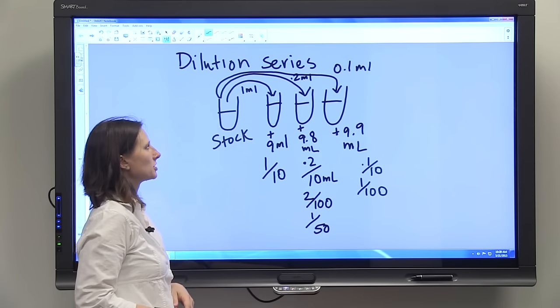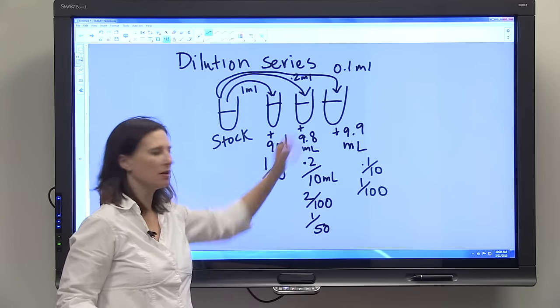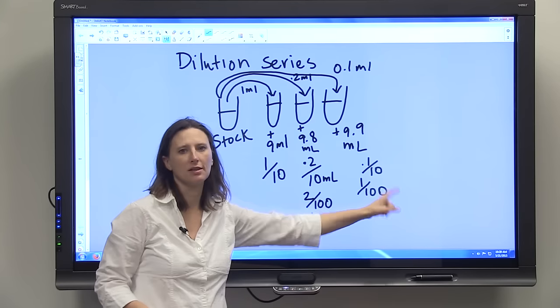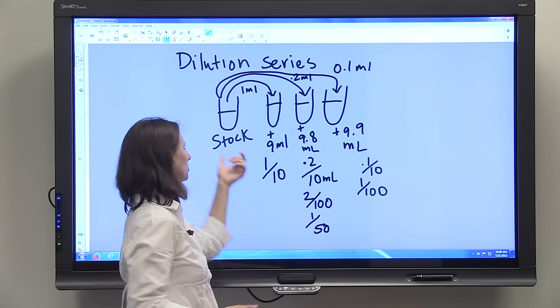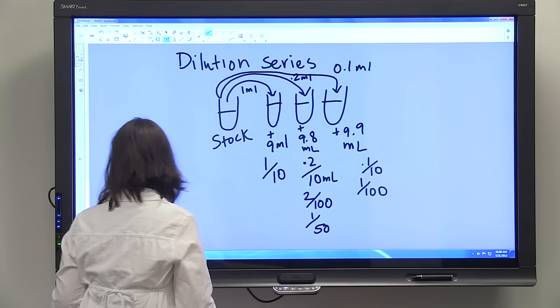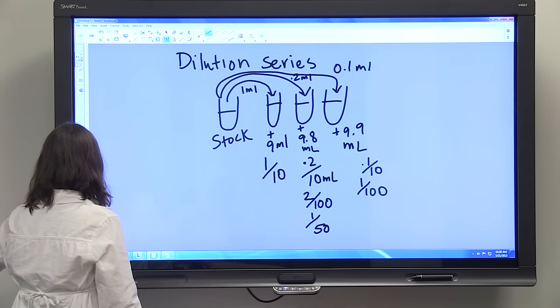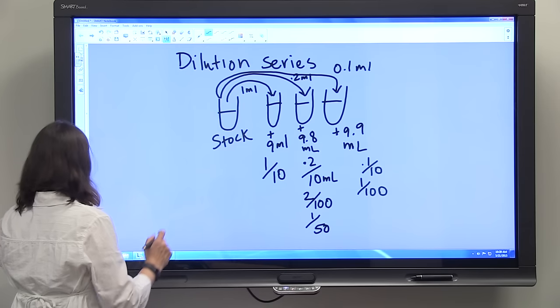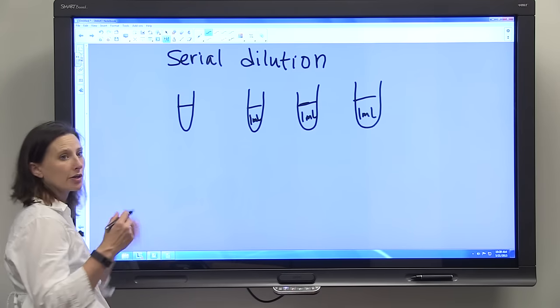So that's a dilution series. It's just a series of dilutions, one tenth, one fiftieth, and one one hundredth dilutions of our stock solution. So a dilution series is a little bit different from a serial dilution.